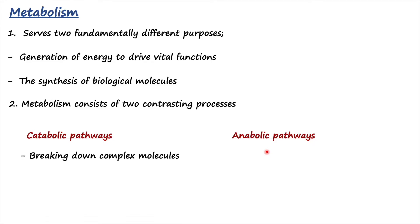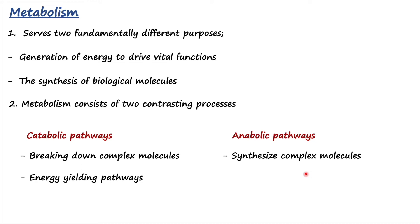Metabolism consists of two contrasting processes: catabolic pathways and anabolic pathways. Catabolic pathways involve the breaking down of complex, energy-rich molecules, and while breaking them down, energy is released — therefore these are called energy-yielding pathways. Opposite to that, anabolic pathways synthesize complex molecules. The precursors required are provided by catabolic pathways, and these are energy-consuming, therefore considered energy-requiring pathways.